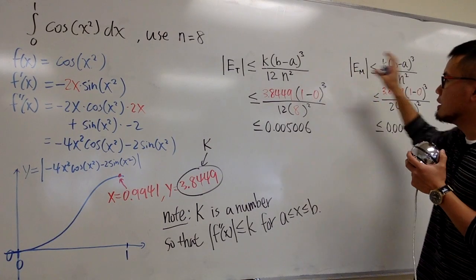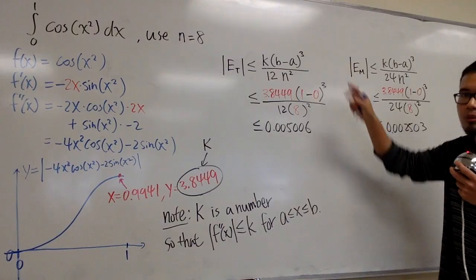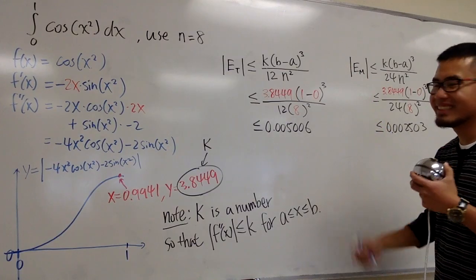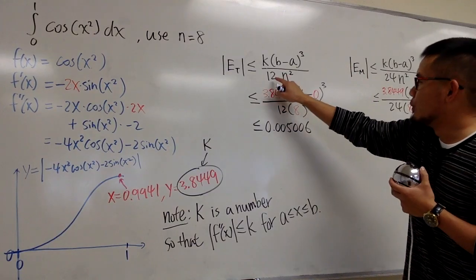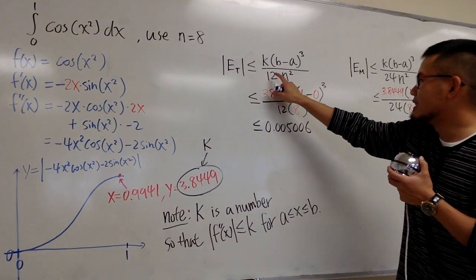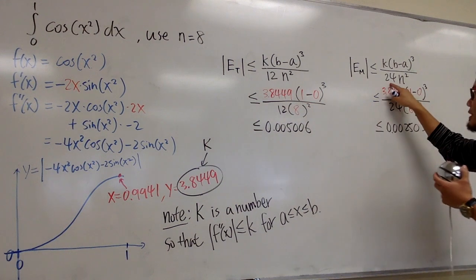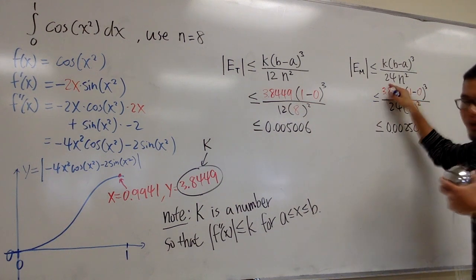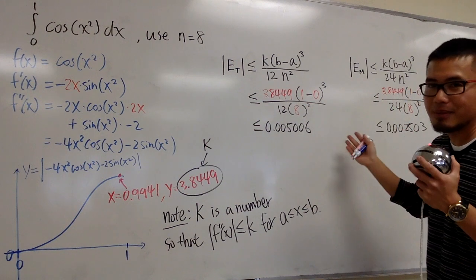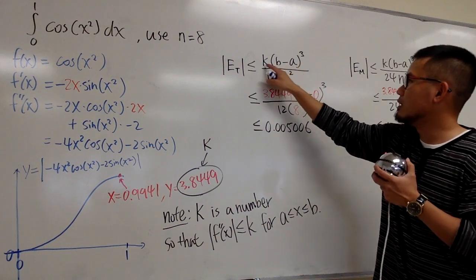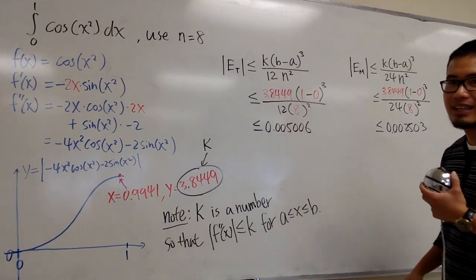Both of these formulas look similar. The only difference is that the trapezoid rule has 12 in the denominator, and the midpoint rule has 24, and the rest are the same. Both of them have the a, b, k, and n values.